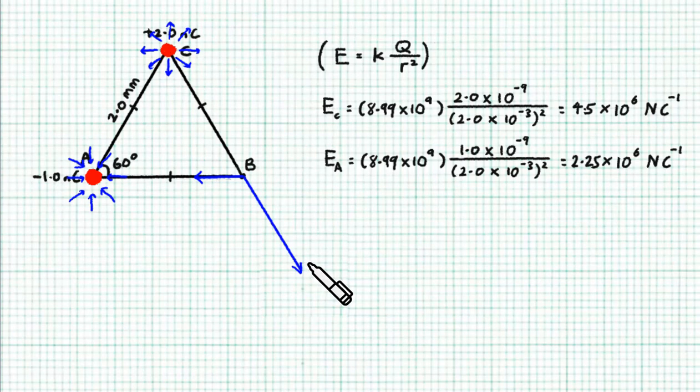So we have EC in this direction and EA in this direction. Now I've chosen the numbers to be very nice. Because EC is exactly 2 times EA and this is 60 degrees, the horizontal component, the rightward component of EC, which is this one here,